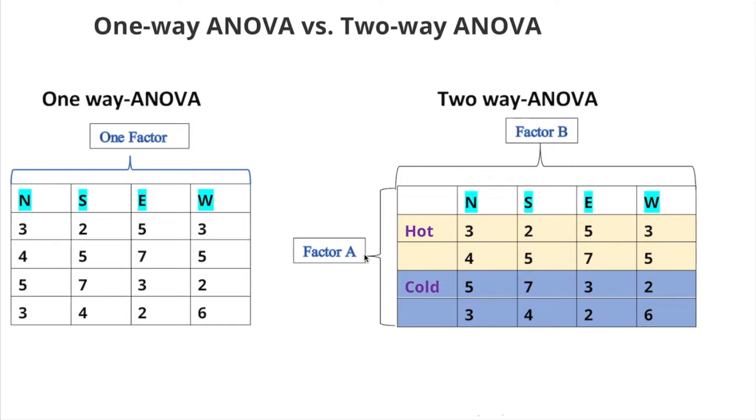Also, I can say Factor A is a group. In this case, rows - there are two rows. Factor B is a column. In this case, one, two, three, four columns here. We can say rows basically refer to the sample and columns basically refer to the column.